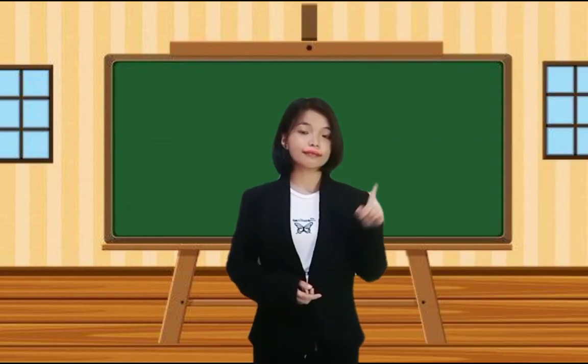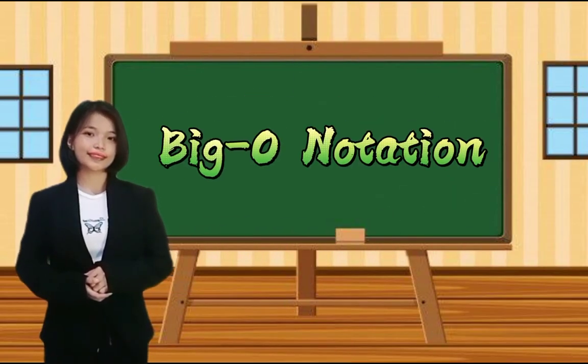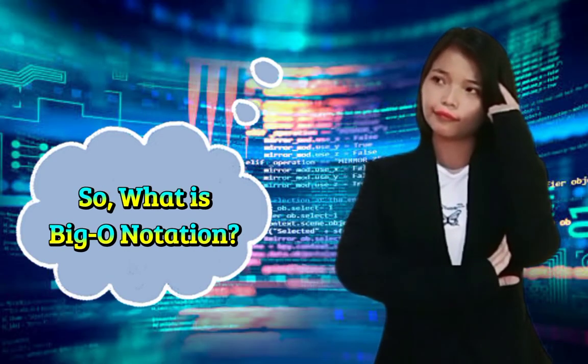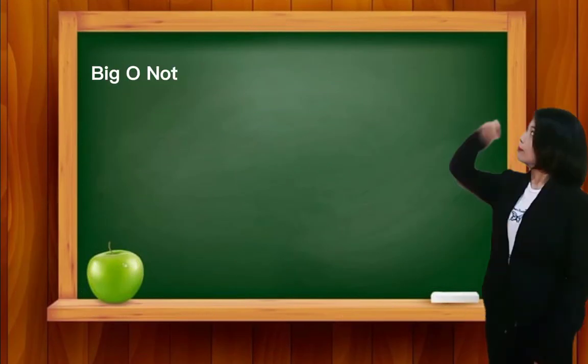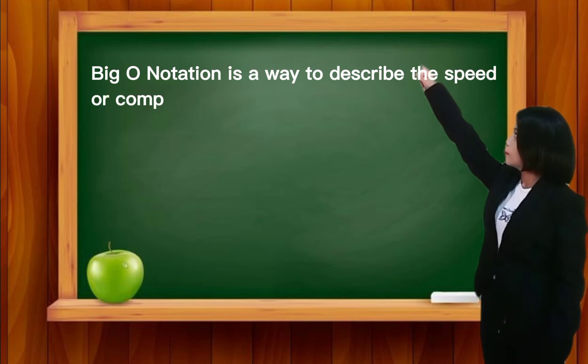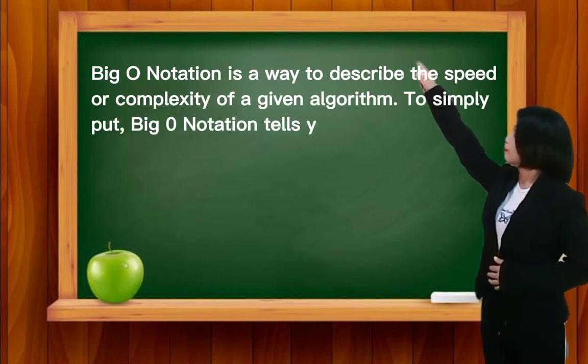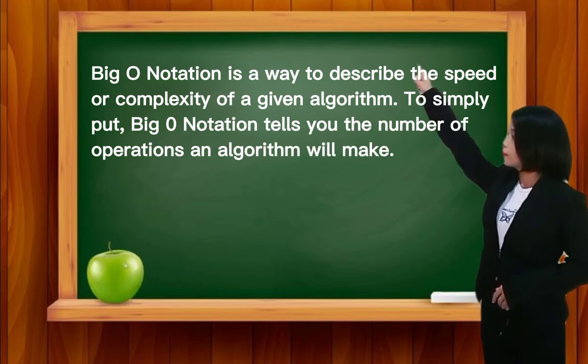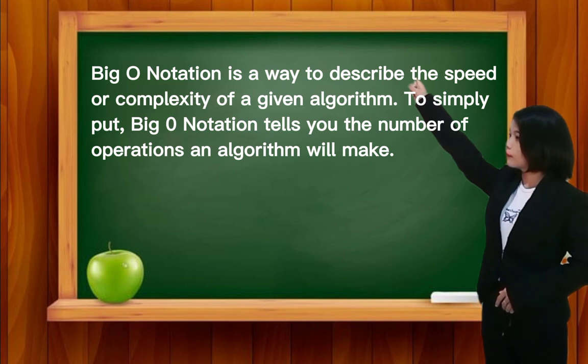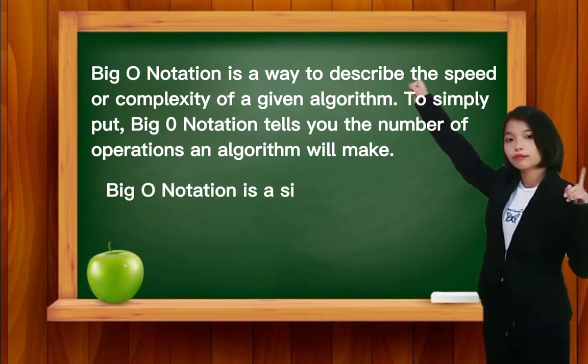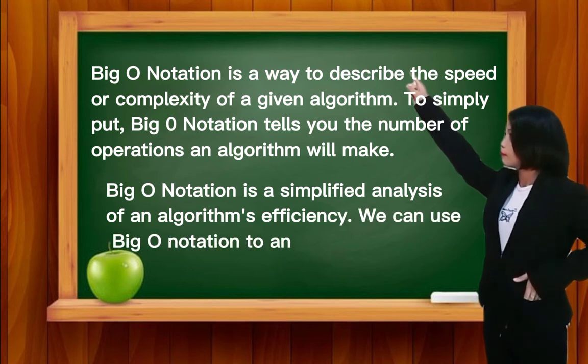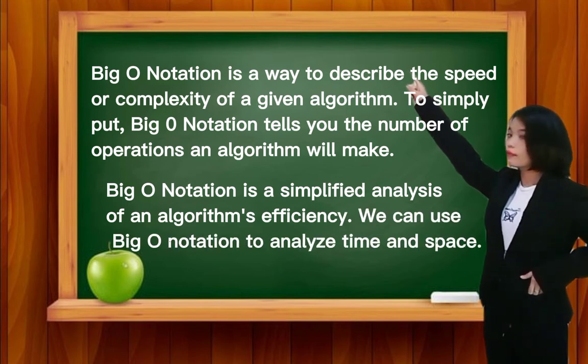Let's now move on to our next topic, which is big O notation. So, what is big O notation? Big O notation is a way to describe the speed or complexity of a given algorithm. To simply put, big O notation tells you the number of operations an algorithm will make. Big O notation is a simplified analysis of an algorithm's efficiency. We can use big O notation to analyze time and space.